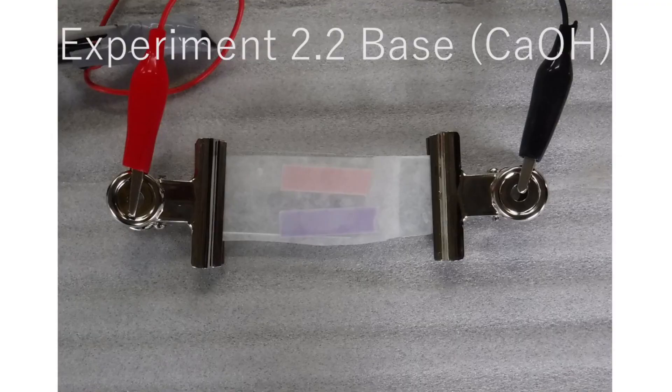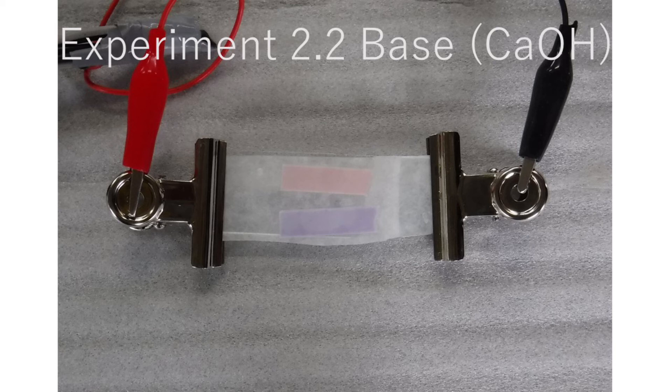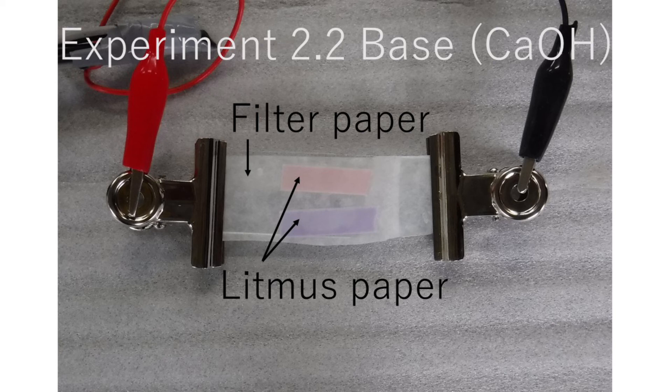Let's try another experiment to avoid the reaction at the negative electrode. Filter paper is placed first, and then two litmus papers are placed on it.